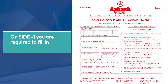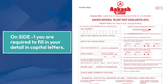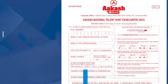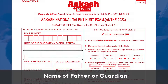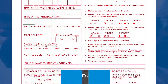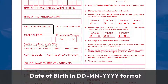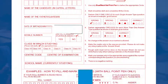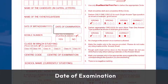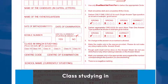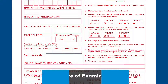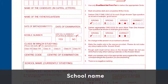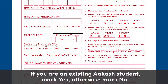On side 1, you are required to fill in your details in capital letters. Fill in your roll number, name, name of father or guardian, date of birth in DD/MM/YYYY format, date of examination, mobile number, class studying in, center code, center of examination, and school name. If you are an existing Aakash student, mark yes; otherwise mark no.